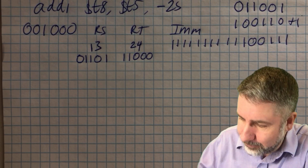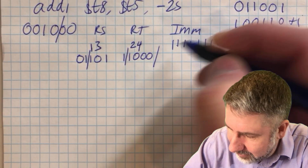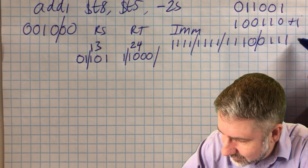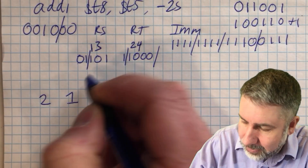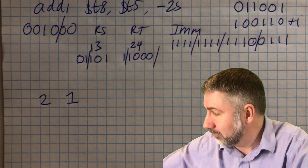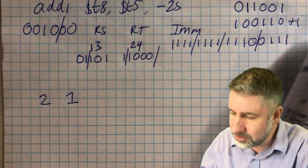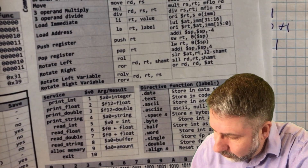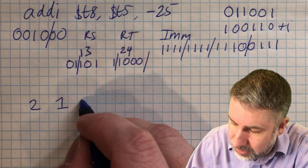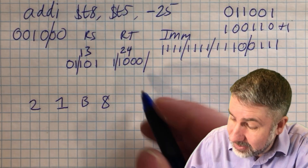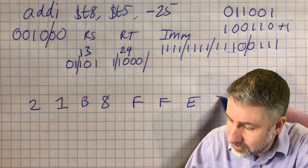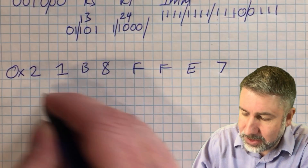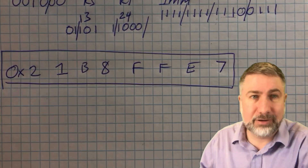Breaking the 32-bit instruction into 4-bit groups: the first group is 0010 which is 2, then 0001 which is 1, then 1011 — let's check the sheet — 1011 is B, then 1000 which is 8, then 1110 which is E, then 0111 which is 7. So we put 0x in front to indicate hex, and our final answer is 0x21B8E7... combining all the fields gives us the complete hex value.